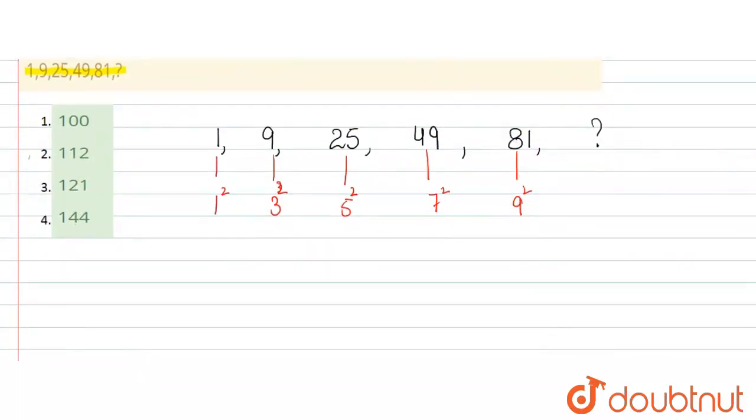The pattern is square of odd numbers. The sequence is odd numbers: first odd number is 1, then 3, then 5, then 7, then 9.